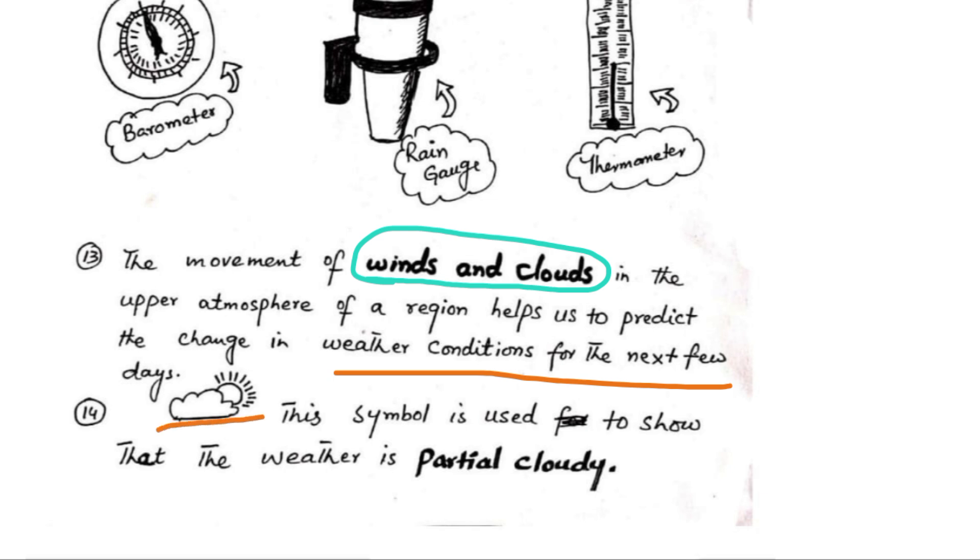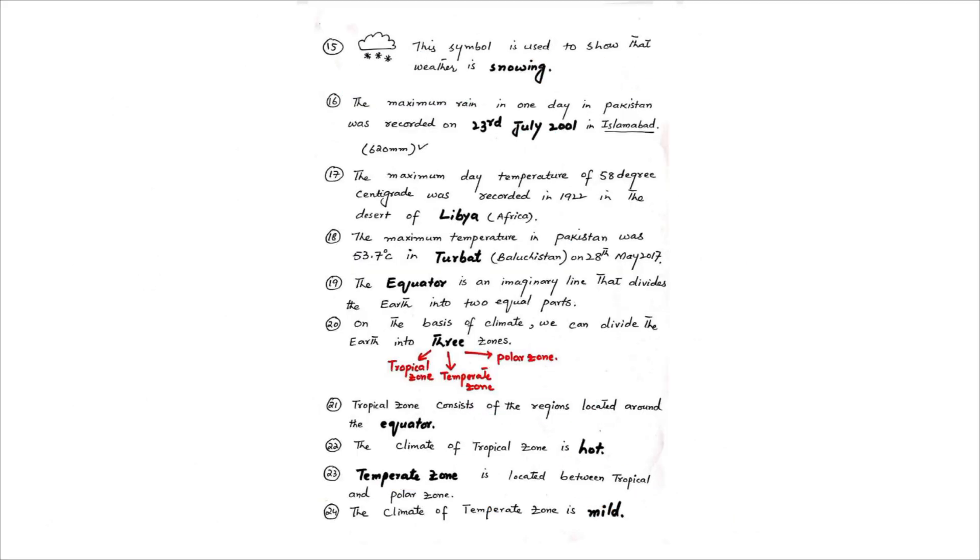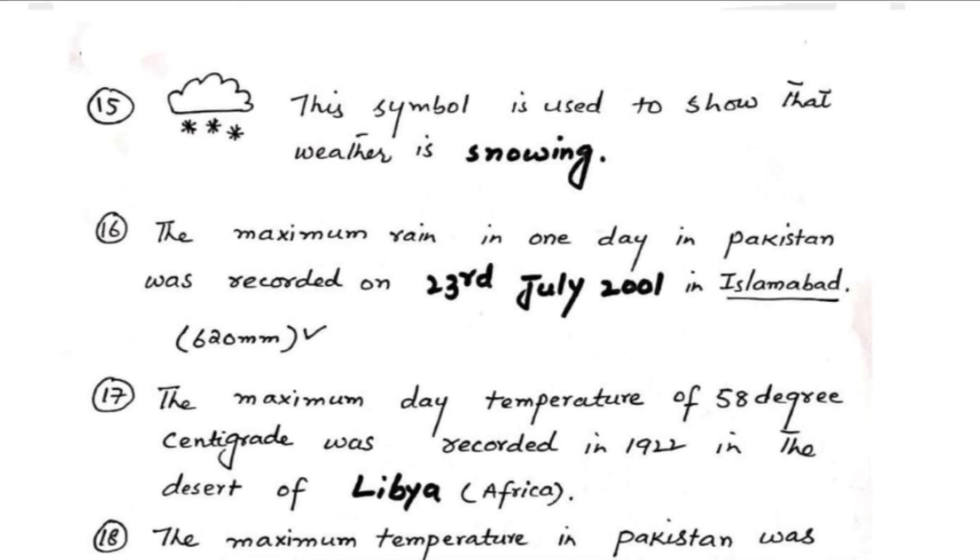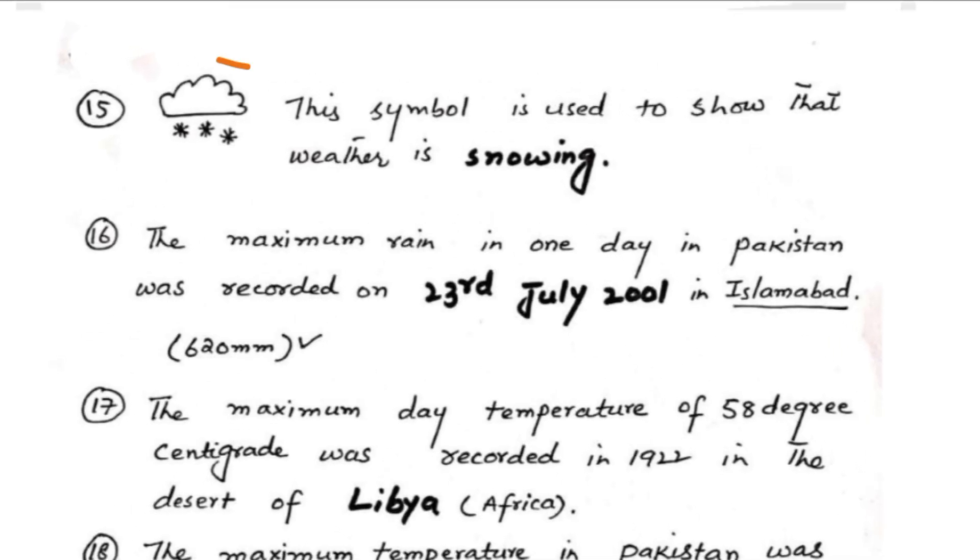We use symbols to show the weather as partially cloudy, rainy, or other conditions. These symbols help us understand weather predictions.